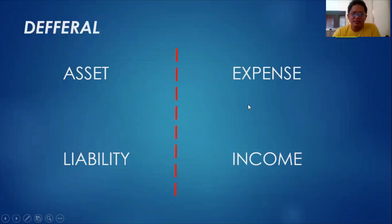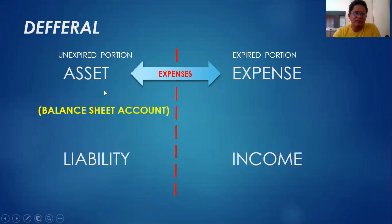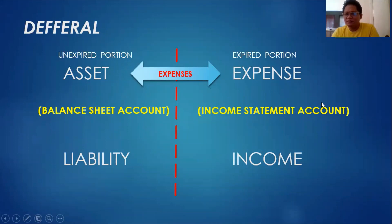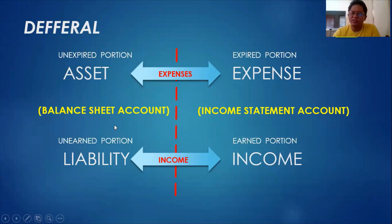Simply stated, when you defer something — say in expenses — it stays in the asset account, which is a balance sheet account. We defer it under a balance sheet account and later transfer it to an expense account or income statement account once it is expired. Likewise, when we recognize income, it stays in a liability account — a balance sheet account — until it is earned, then the earned portion is transferred into an income statement account.